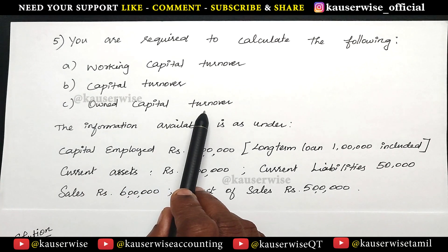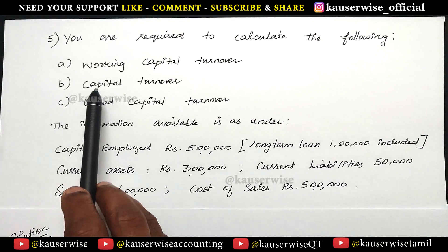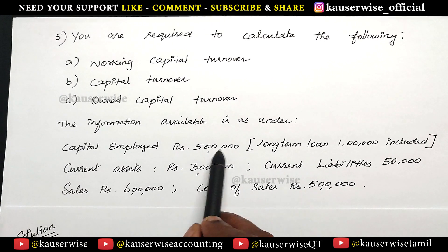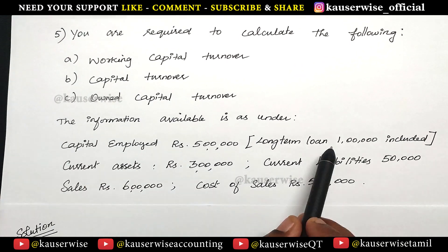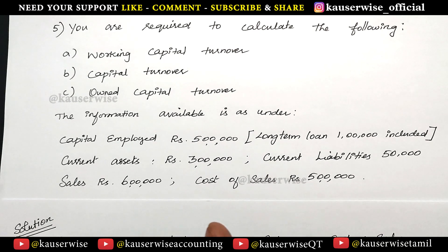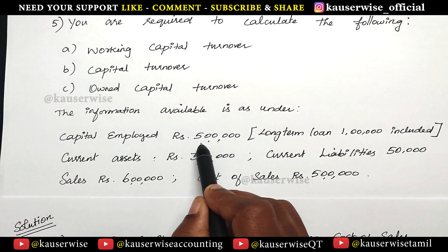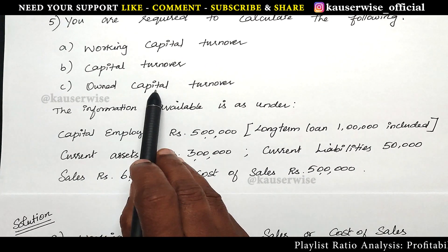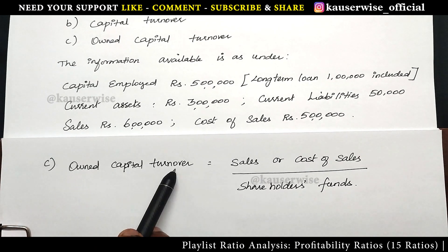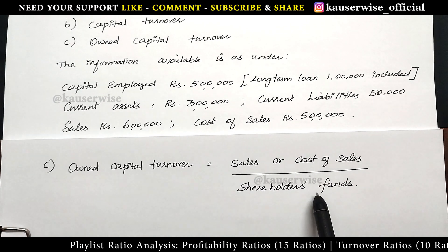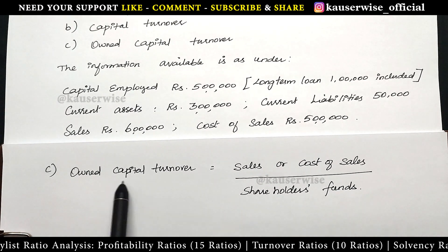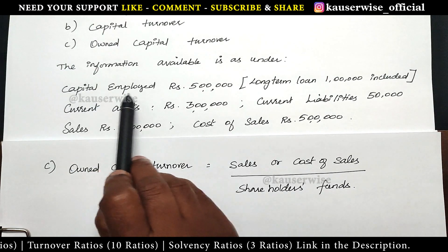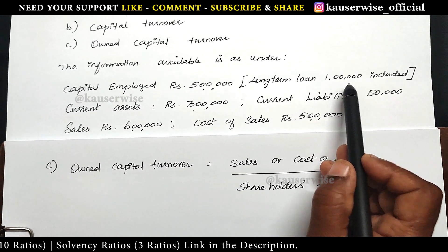Now we are going to find out the third one, that is owned capital turnover ratio. There is a difference between capital turnover and owned capital turnover. In capital turnover we take the entire capital employed, inclusive of long term loan. Whereas owned capital means excluding debt — only equity. Shareholder fund alone is taken into consideration. Total capital employed minus long term loan gives you equity shareholders fund.